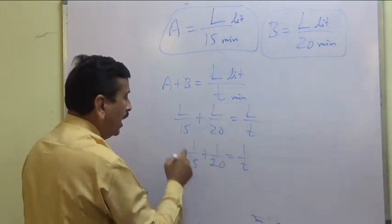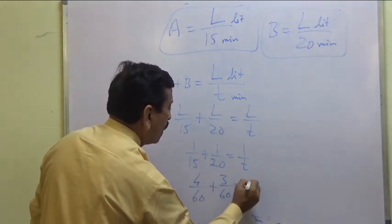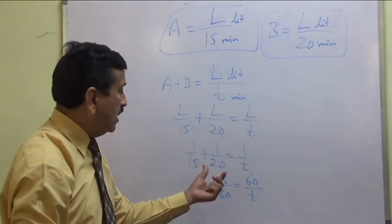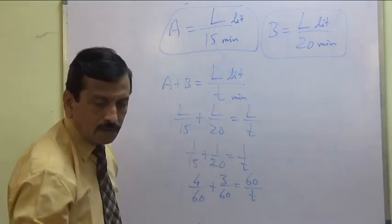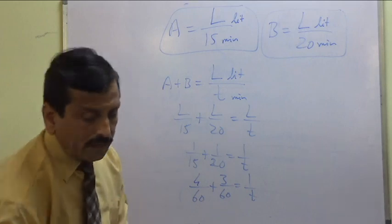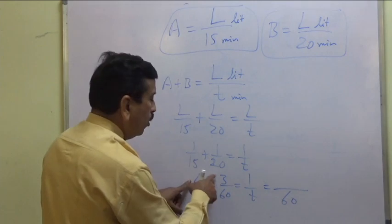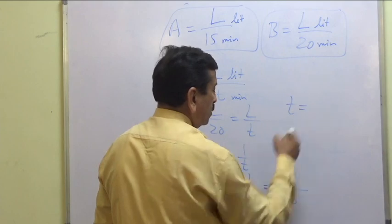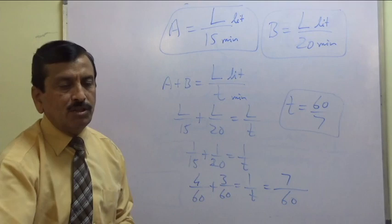We have 4 plus 3 equals 7, so 1 by T equals 7 by 60, and therefore T equals 60 by 7 minutes. Check the solution part.